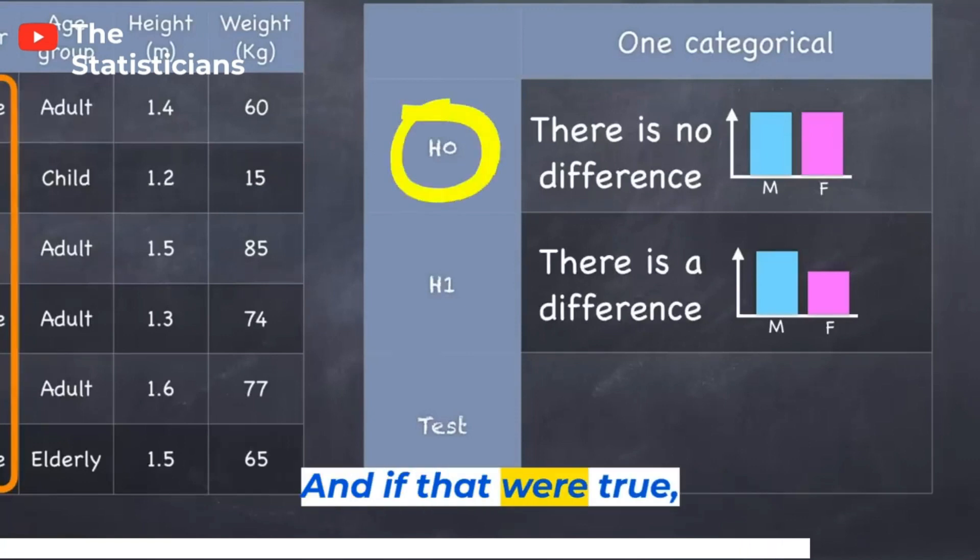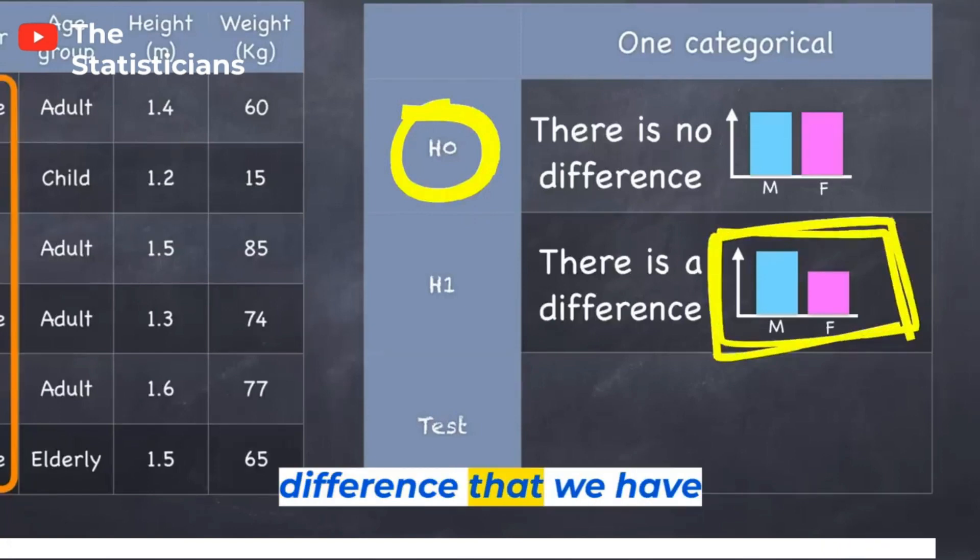And if that were true, how likely would it be? What are the chances? What is the probability that we would see the difference that we have observed or a greater difference for that matter?